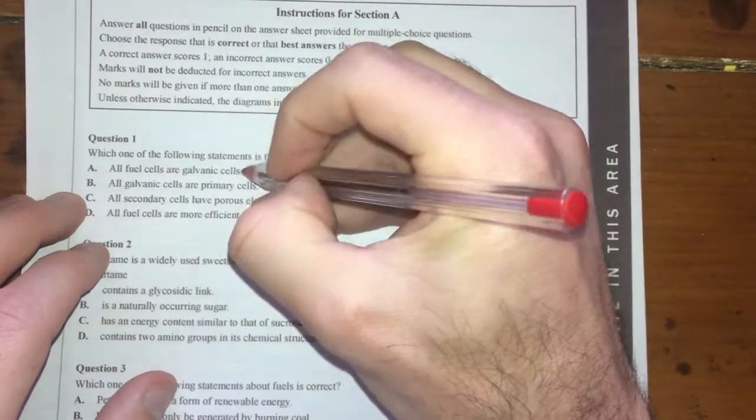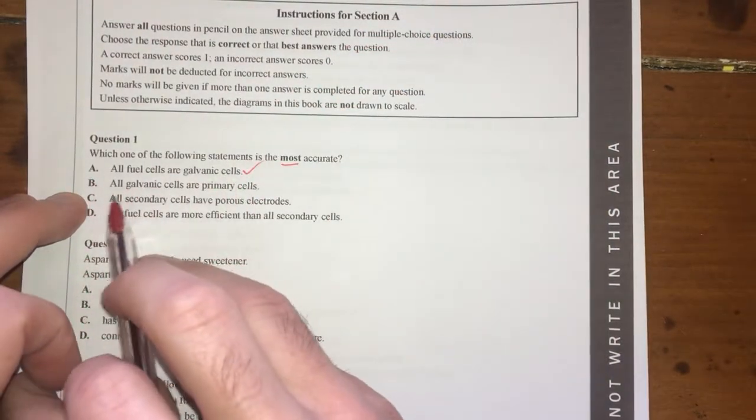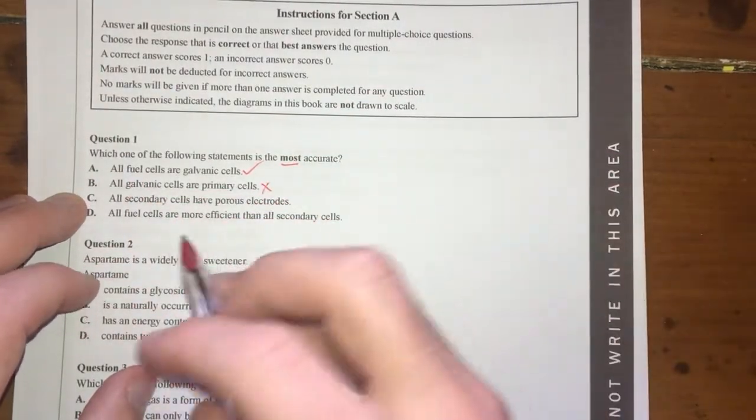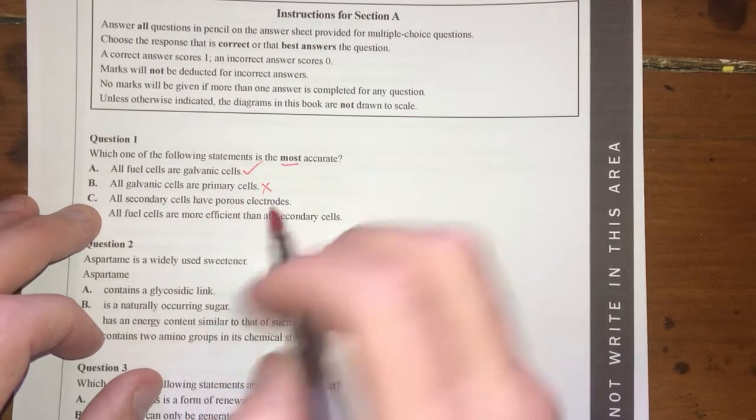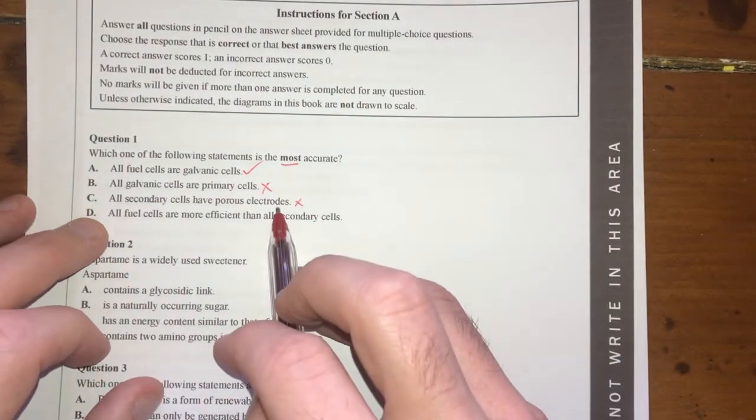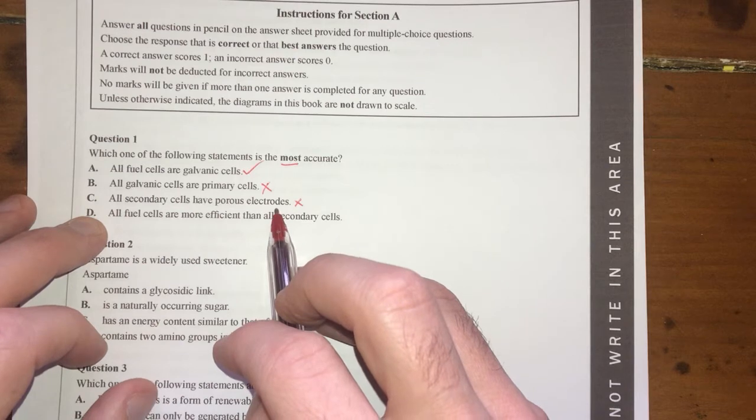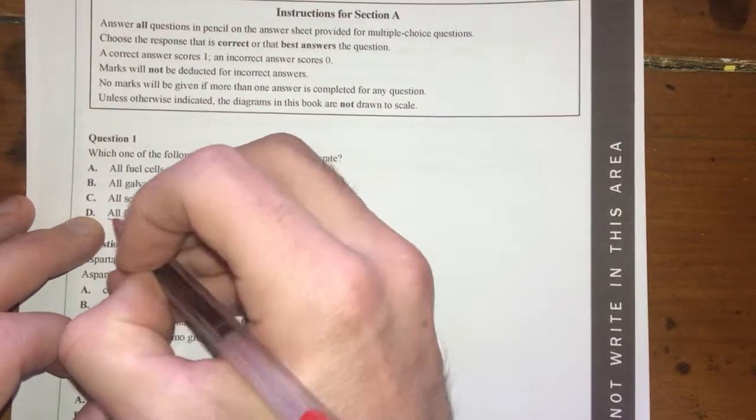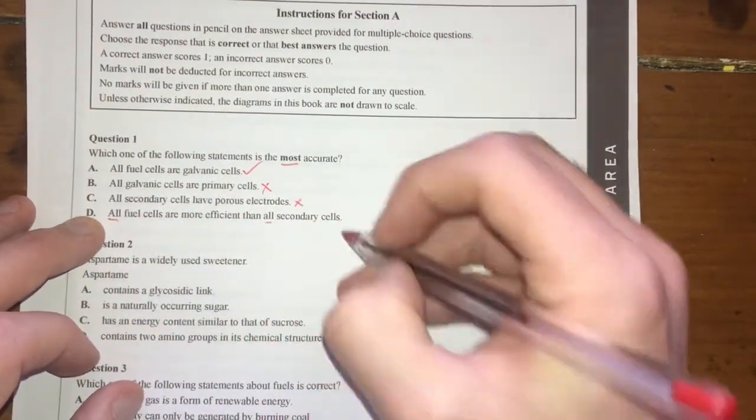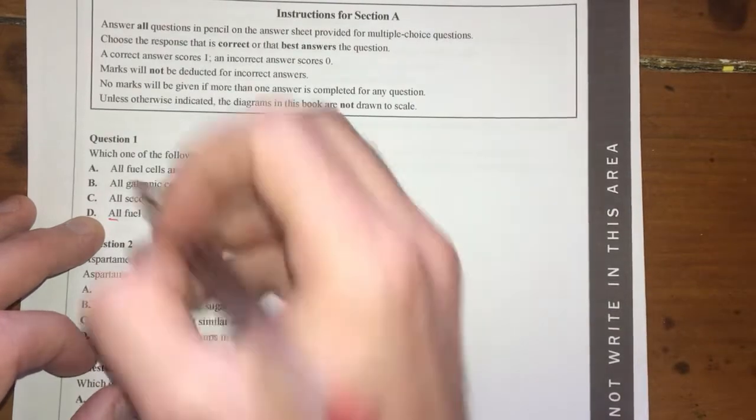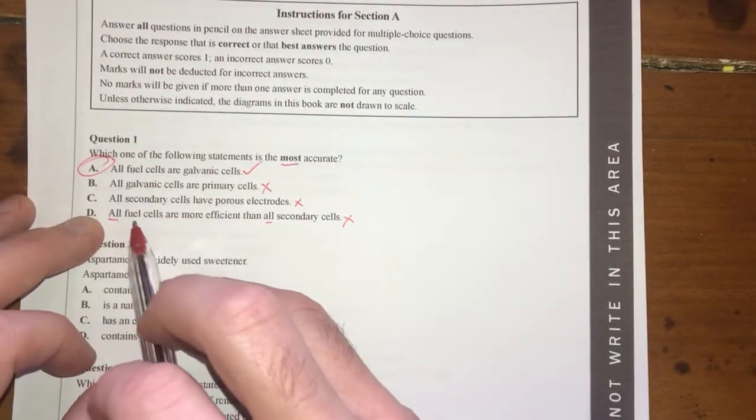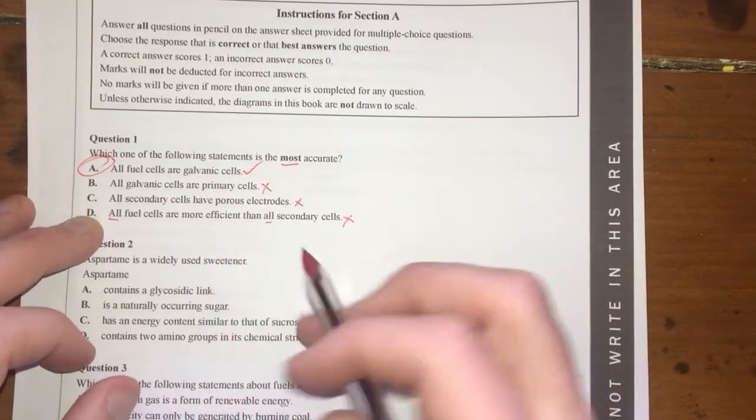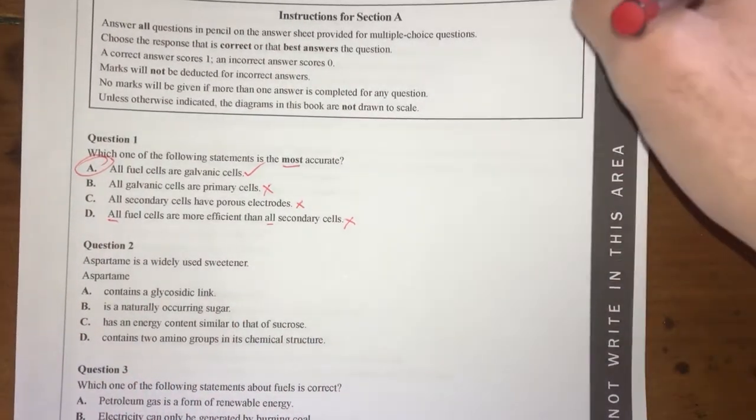That is true, so I'm pretty sure A is the right answer. All galvanic cells are primary cells—that's not true because galvanic cells can be fuel cells or secondary cells. All secondary cells have porous electrodes—that's not true, doesn't always happen. All fuel cells are more efficient than all secondary cells—the 'all' and the 'all' here is quite harsh. This is a better option but I don't think every single fuel cell is more efficient than a secondary cell. Definitely A, easy answer.